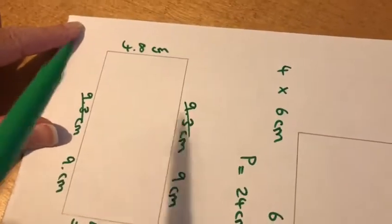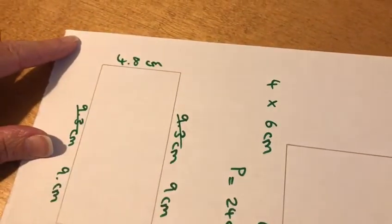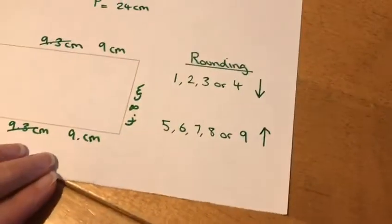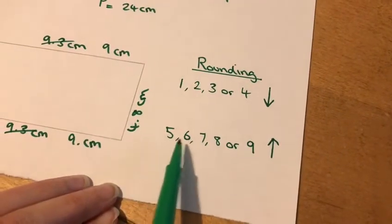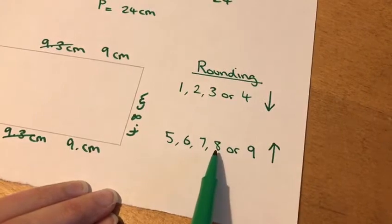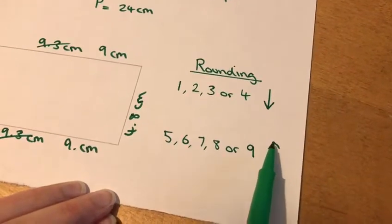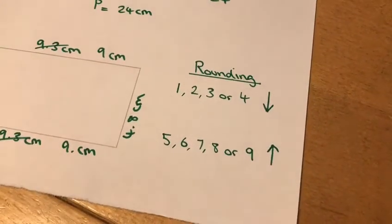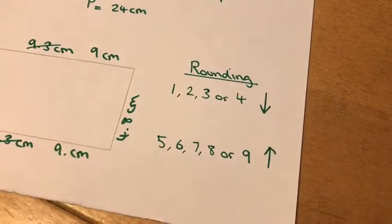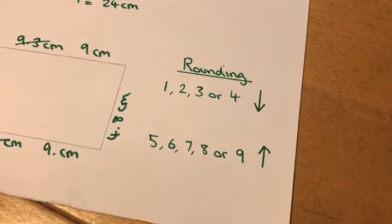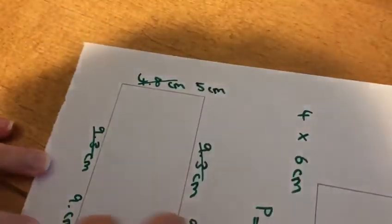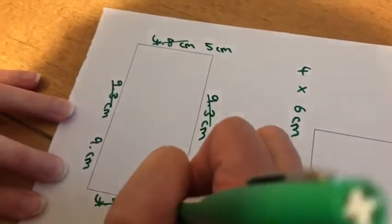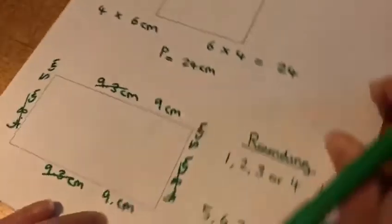For my short side, we can see it's 4.8 centimetres, and looking at the number on the right hand side, which is the 8, in this list here we can see that if a number ends with an 8, we have to round up to the next whole centimetre. So the centimetre after four centimetres is five centimetres. So I'm going to change that measurement there to five centimetres. I've rounded 4.8 up to five centimetres.